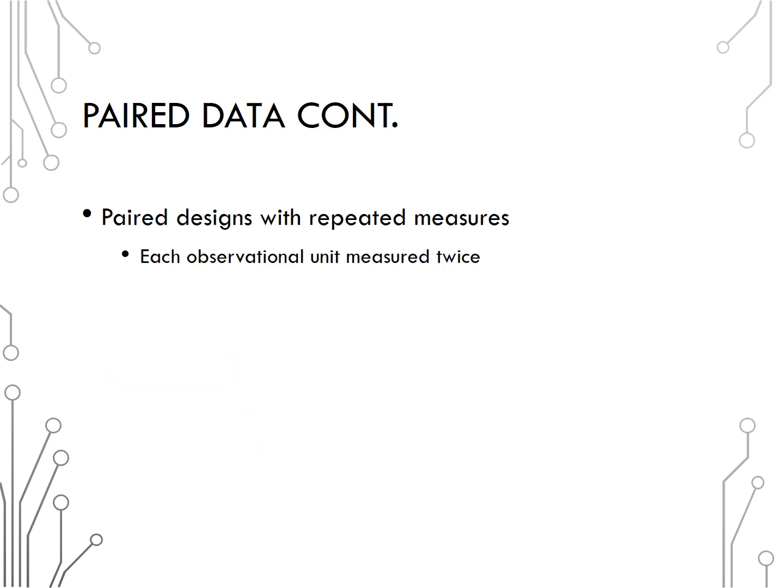There are two types of paired designs. The most common is paired with repeated measures. In this situation, each observational unit is measured twice. An example of this is measuring a person before and after some event, like a pre-course and post-course test.